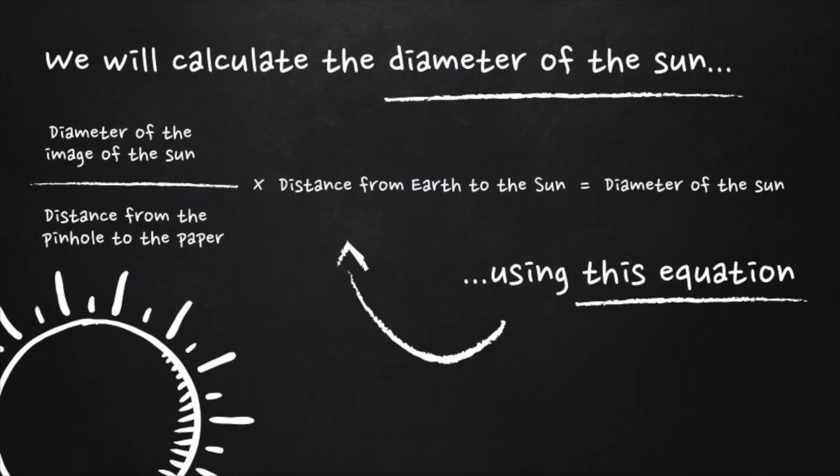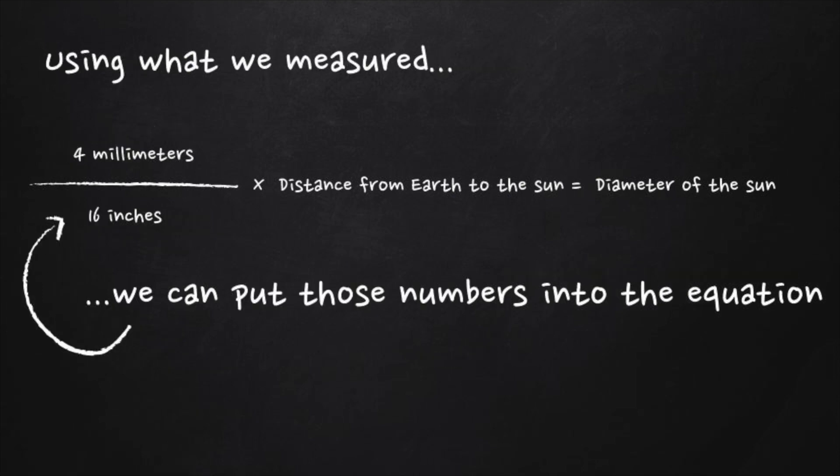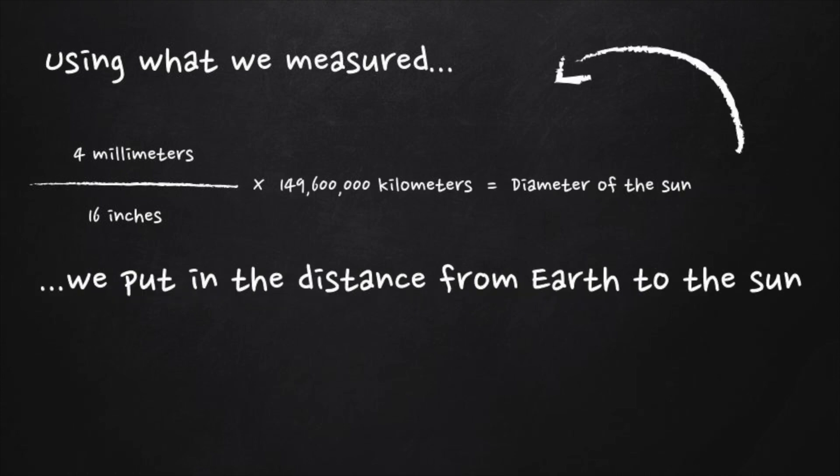Back to our equation again. Now I'm going to plug in the data that I collected. My sun image was 4 millimeters in diameter when my viewer was 16 inches away. So I can record those two numbers to create my fraction. I also know the approximate distance from the Earth to the sun, 149,600,000 kilometers. Now I have all of the numbers for my equation. I will need to divide, then multiply.